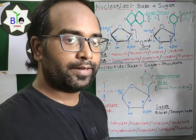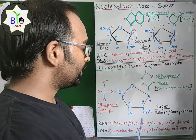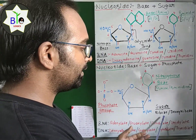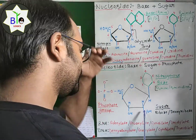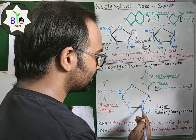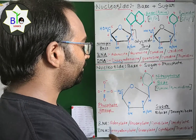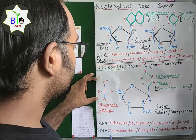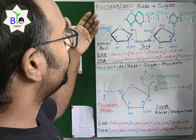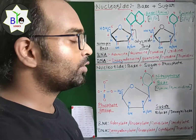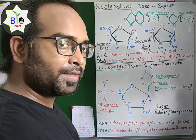Now we move to the nucleotide, which is made up of base, sugar, and phosphate. Here you can see the structure of sugar again, which may be either ribose or deoxyribose depending on the atom present at carbon number two. In a nucleotide, one phosphate group is also present; the rest of the structure is the same as in a nucleoside.